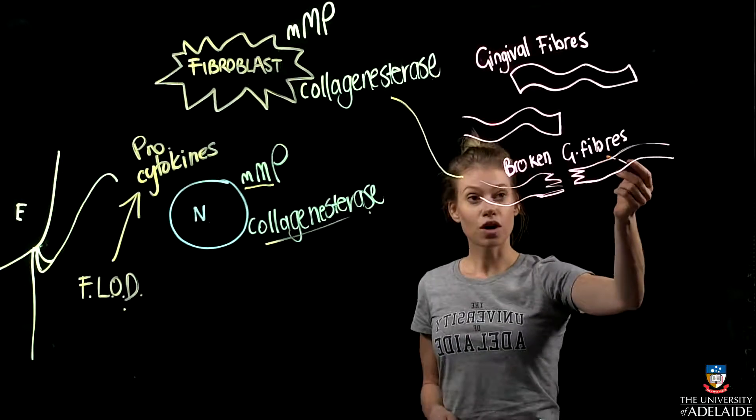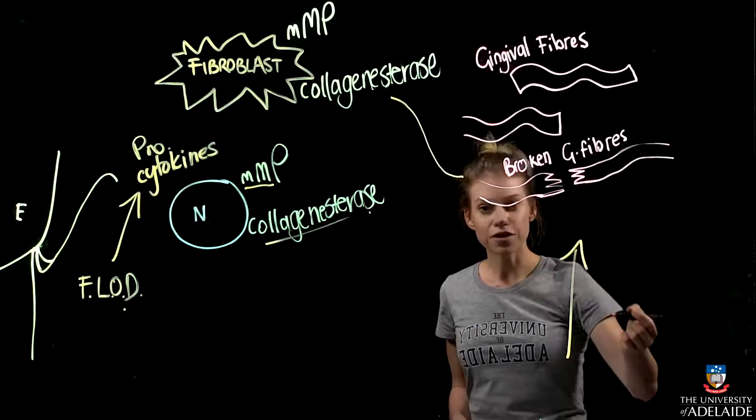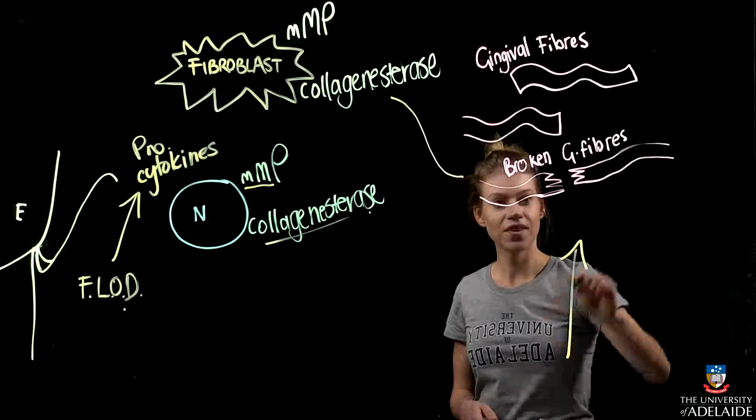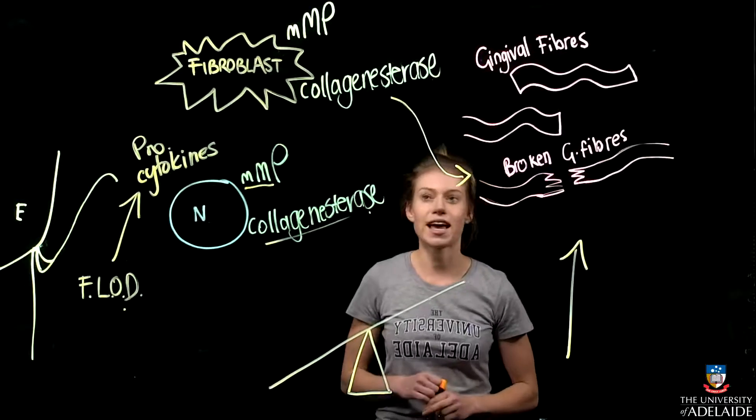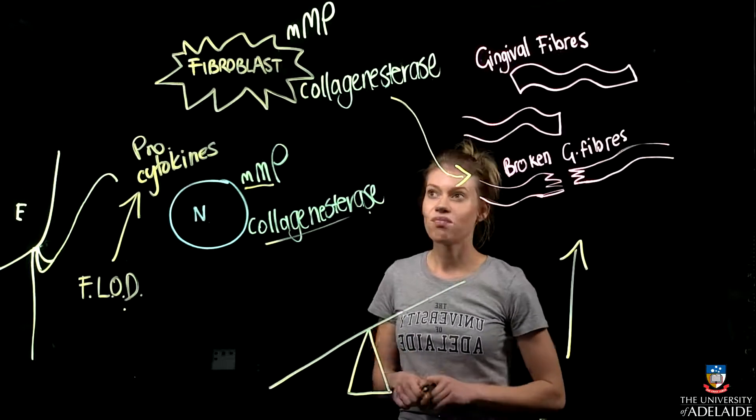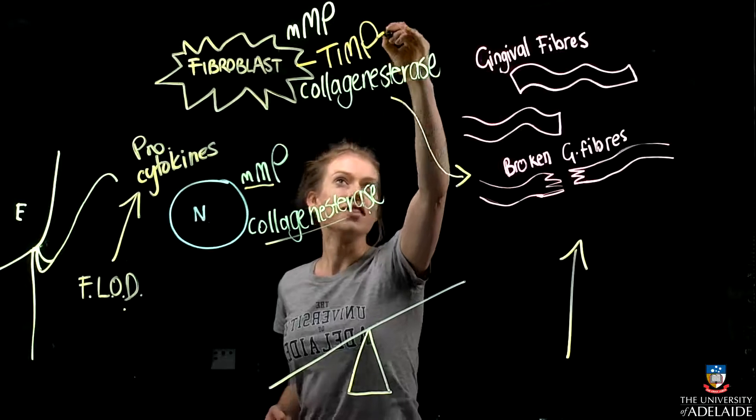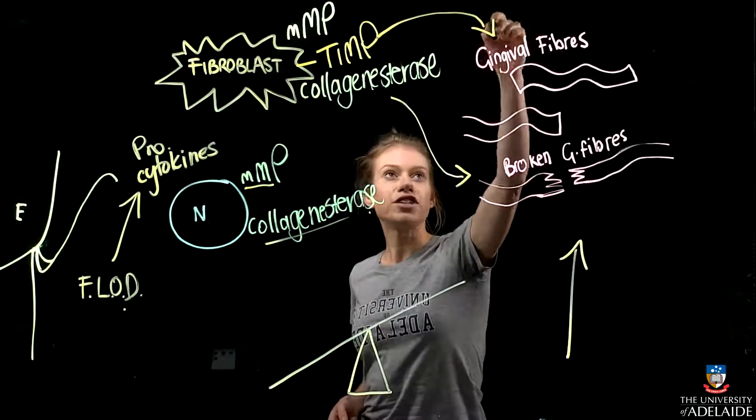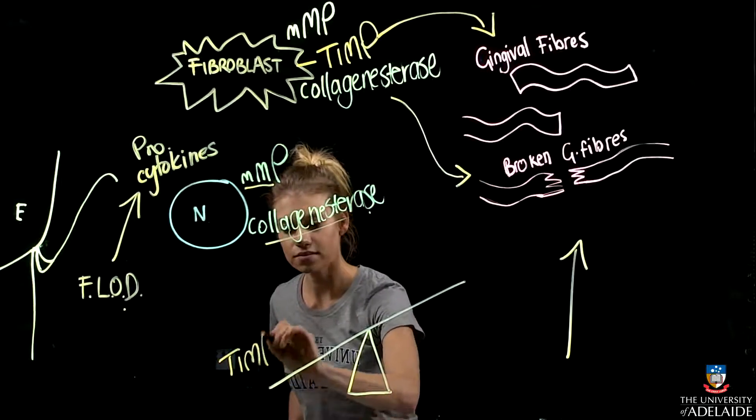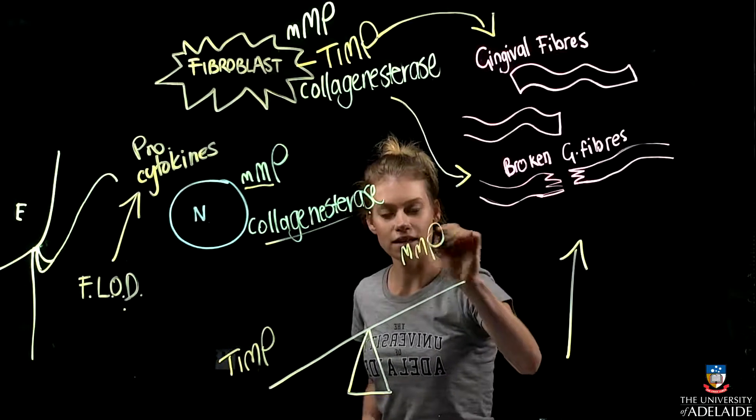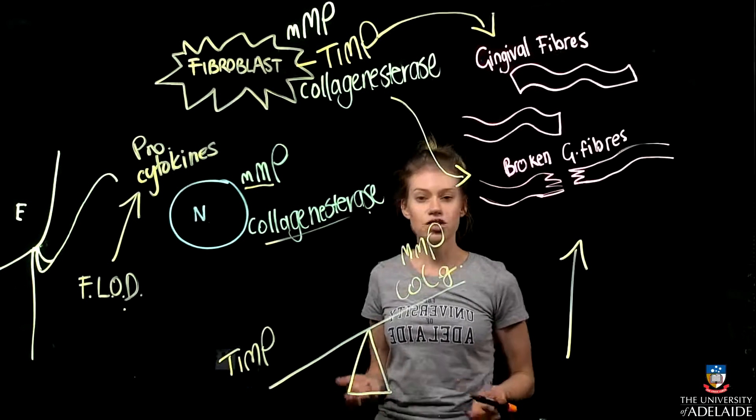The broken down gingival collagen fibers have spaces between them which allow for an influx of immune cells that can get through to promote healing. As we know, gingivitis is a repairable condition, and this is due to the TIMP enzyme which is released by fibroblasts and encourages the regeneration and repair of collagen fibers. The more TIMP we have compared to MMPs and collagenase, the more it promotes healing of the gingival collagen fibers.